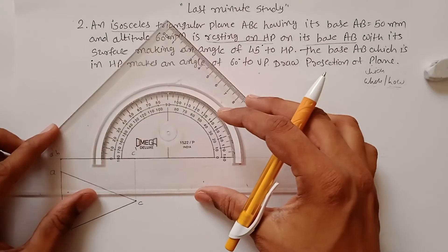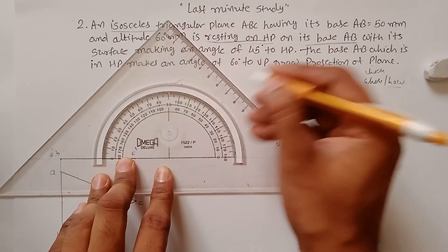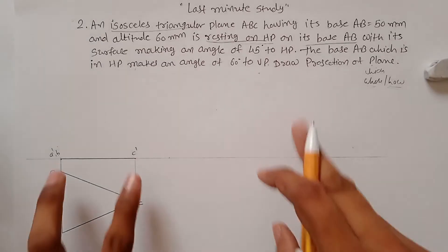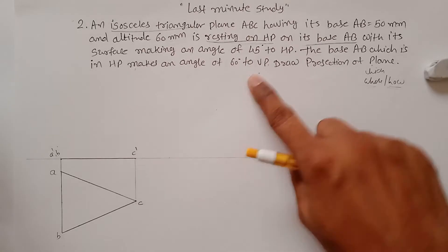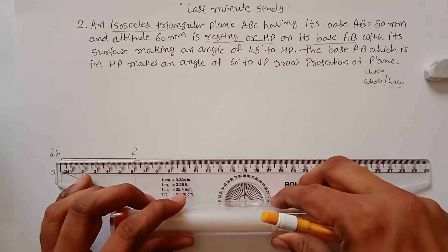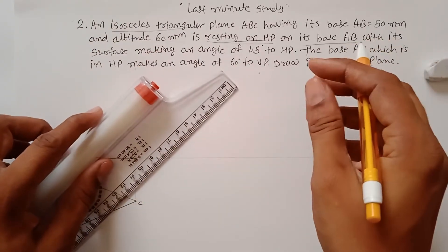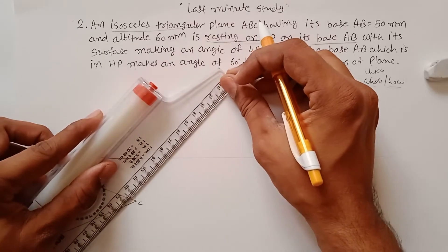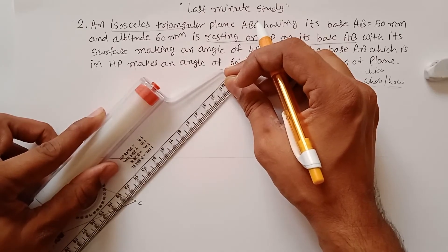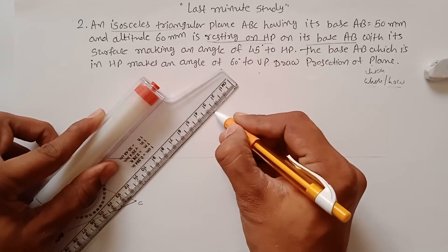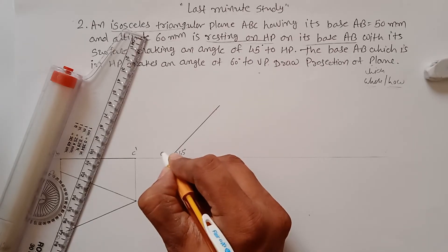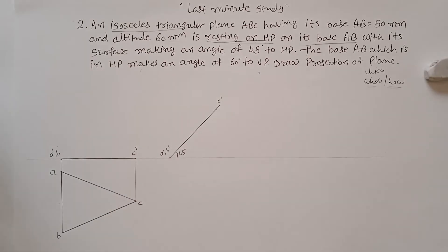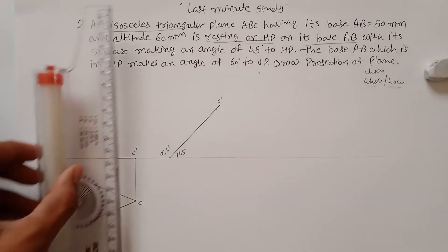You have to measure an angle of 45 degrees from this point — you can take any distance. Transfer this line at an angle of 45 degrees. You can draw a line, measure a distance, and make an arc, or just measure the distance of 60 mm and draw a line at 45 degrees from this point. This angle is 45 degrees — this point is A', B', and C' from the front view of the initial position.